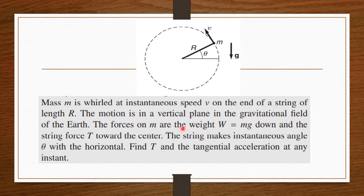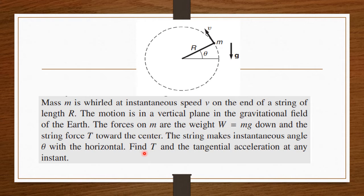The forces on m are two: one is the weight mg downward, and the string force T towards the center. These are the two forces acting on mass m. The string makes an instantaneous angle theta with the horizontal. We have to find the string force T and also the tangential acceleration at any instant.